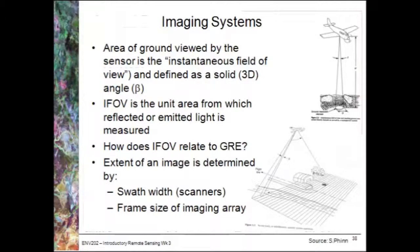The way an imaging sensor works is that if it can cover a large area, it does so with a large pixel size. From the sensor's point of view, the relevant term is the instantaneous field of view — that's the area from which the reflected or emitted light is measured.